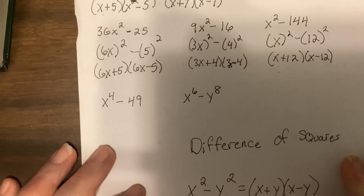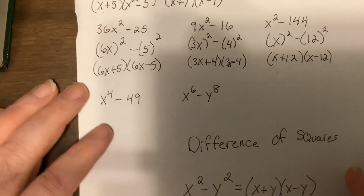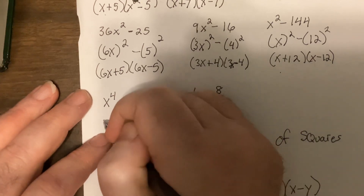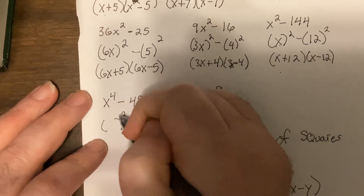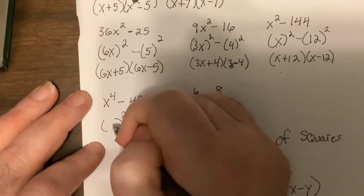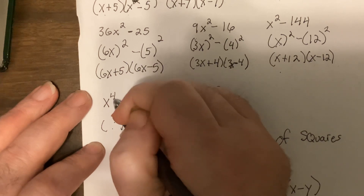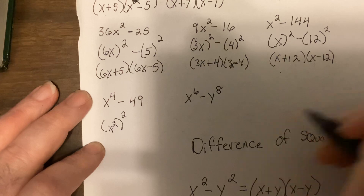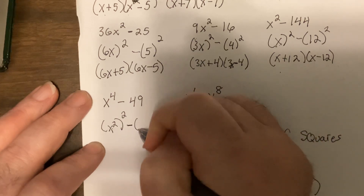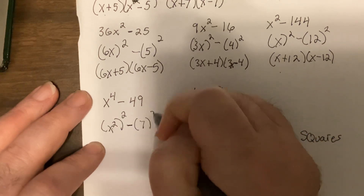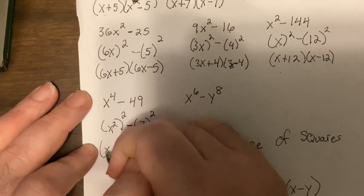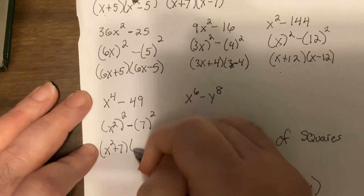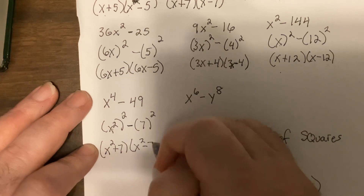Okay, let's do really challenging problems now. When you have a base to a power raised to a power, you multiply. So this would be x squared minus what you square — 7. So: (x² + 7)(x² − 7).